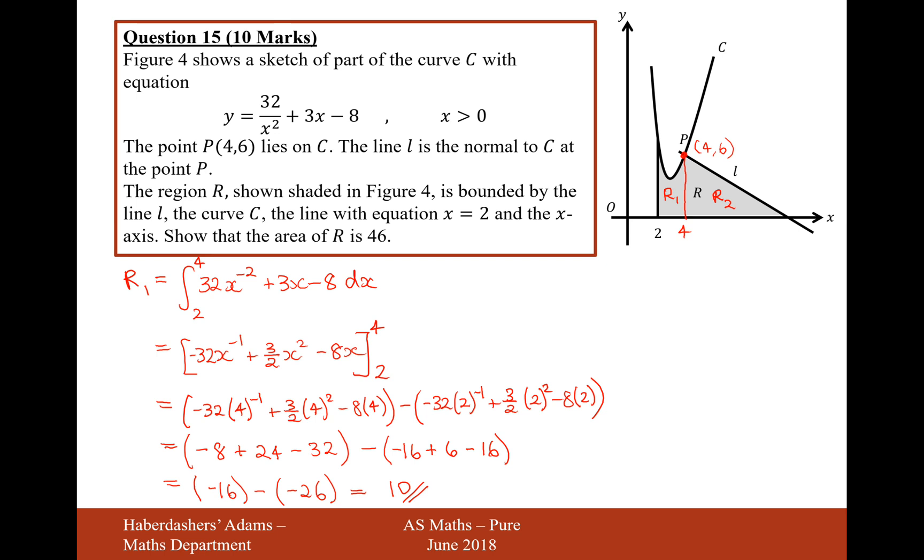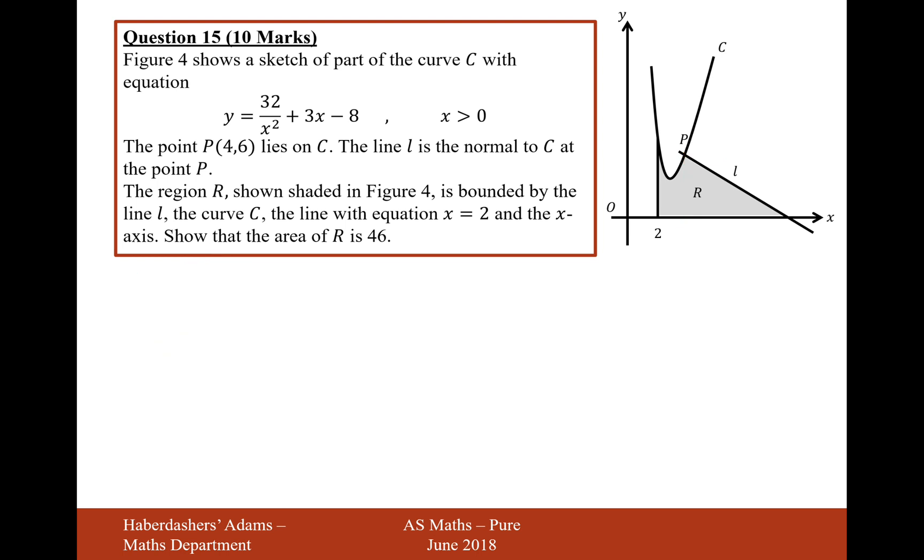Let's now move on to R2. We've got the boundary of 4 here, and this is 4, 6. If line L is a normal line, it's important that we work out the gradient of line C at P, and then find the perpendicular gradient. So we need to differentiate: 32x to the minus 2 plus 3x minus 8. I'm just writing my curve in a more differentiable form.